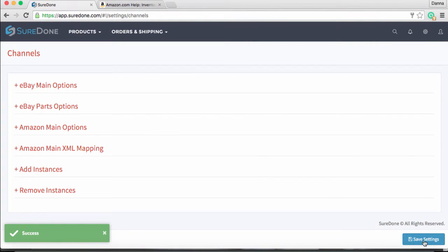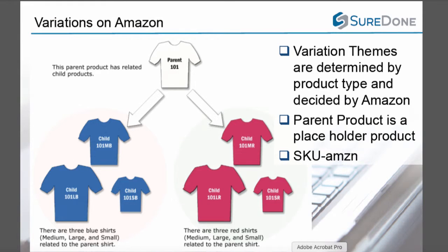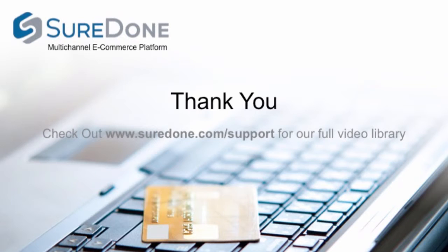Keep in mind that you will need to repeat this procedure for all of your product types in the Amazon XML options. Also, if you do not find a variation section in the data definitions tab of an inventory file template, it indicates that variations are not allowed to be listed under that category.